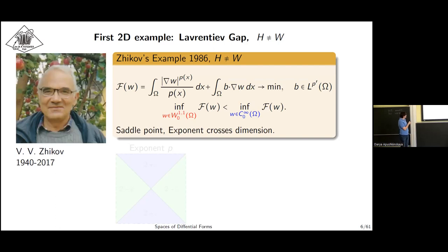In 1986, Zhikov constructed his famous example for Lavrentiev gap in the case of functional of this form. He found exponent P and vector field B, actually a solenoidal vector field, such that these two numbers are different. The exponent looks like this.